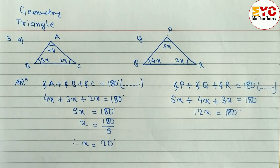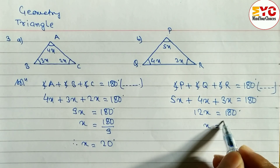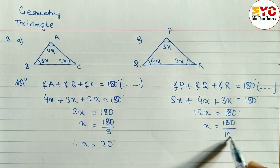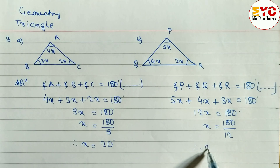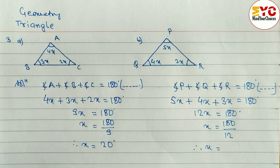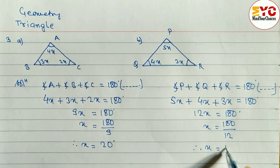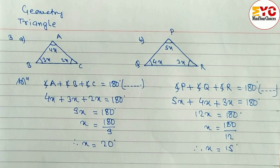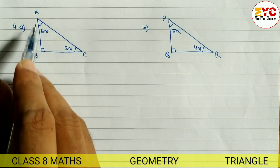Now we have to find out the value of X. This is in multiplication so we have to divide. X is equal to 180 divided by 12. Therefore when you divide this, we get the value of X: 180 divided by 12 gives us 15. So the value of X is equal to 15 degrees.